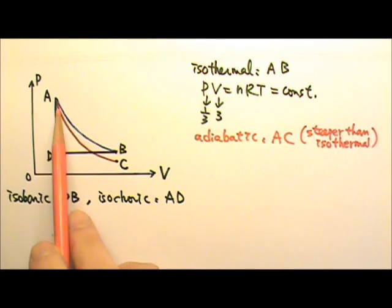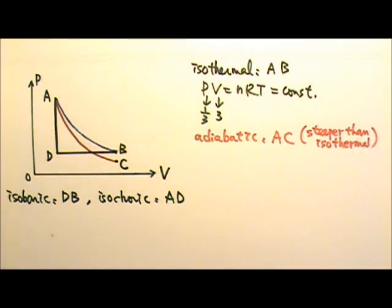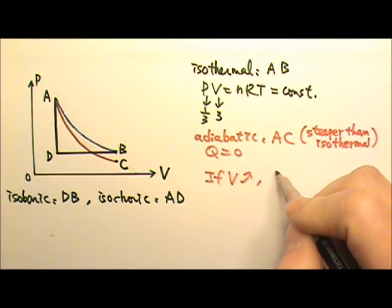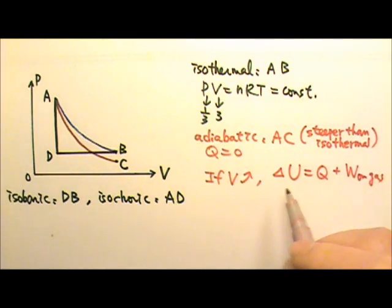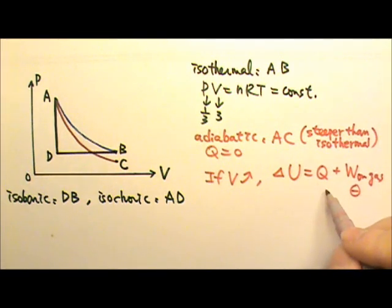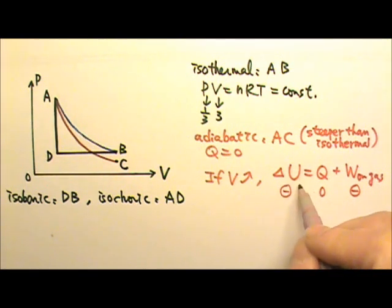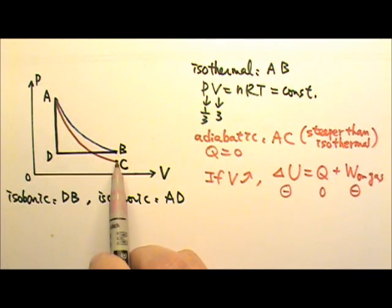For adiabatic process, it is AC. It looks kind of like isothermal curve, but it is steeper than the isothermal path. Because by definition, adiabatic means there is no heat exchange. Q is zero. So for example, if it's an adiabatic expansion, the volume increases. According to the first law, delta U would equal to Q plus the work done on the gas. If the volume increases, the work done on the gas would be a negative number. And the Q is zero because it's an adiabatic process. That means that delta U must be negative. U, the internal energy, only depends on the temperature. So if the internal energy decreases, delta U being negative means the temperature decreases. So an adiabatic expansion must end with a lower temperature.